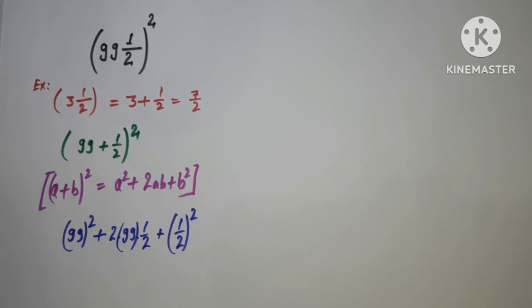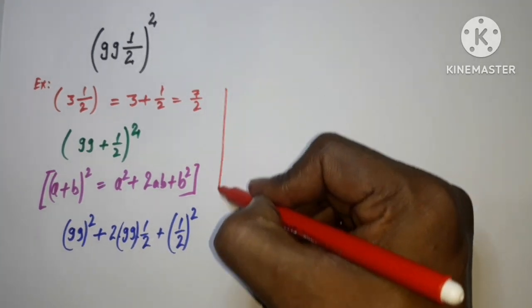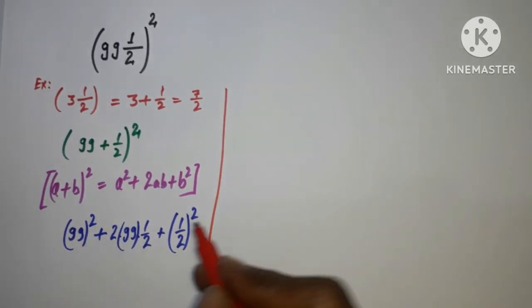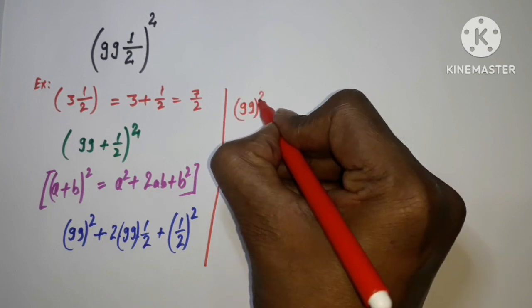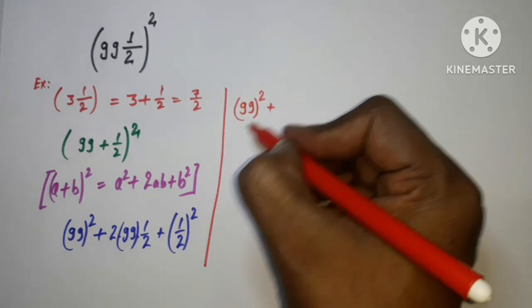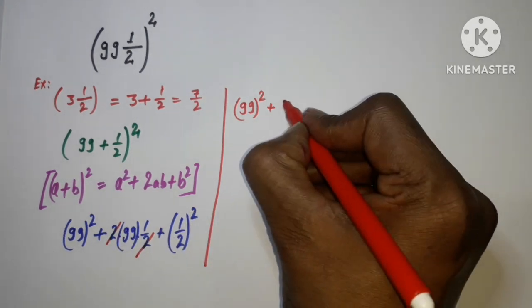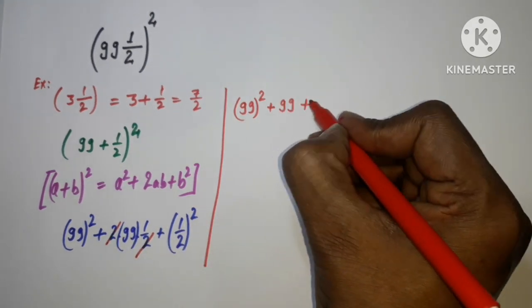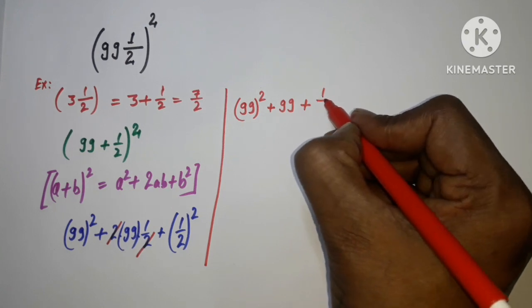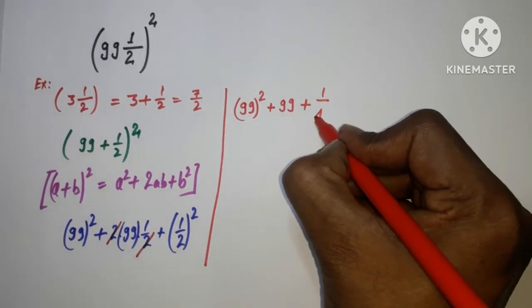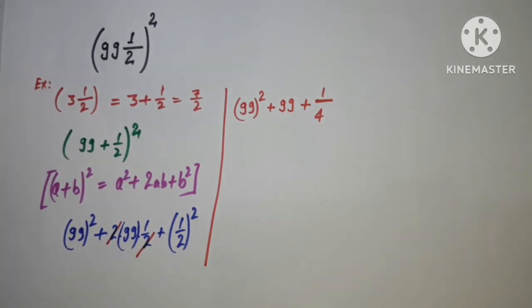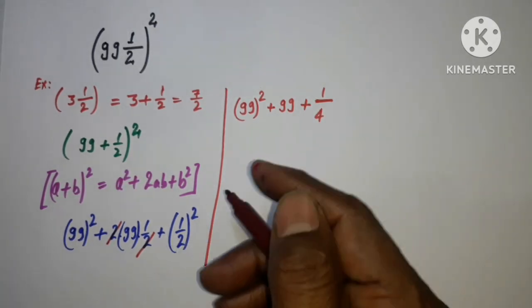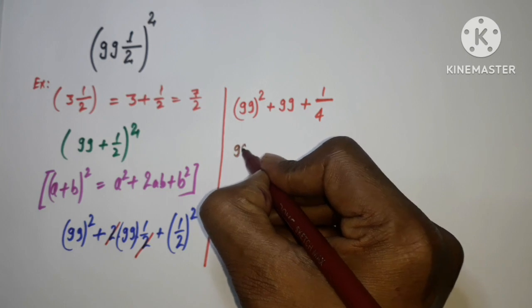After this, (99)² is a much bigger number, so I'm just writing it as is. Here 2 and 2 will cancel in the middle term. For the last term, 1² is 1 and 2² is 4, so this is 1/4.